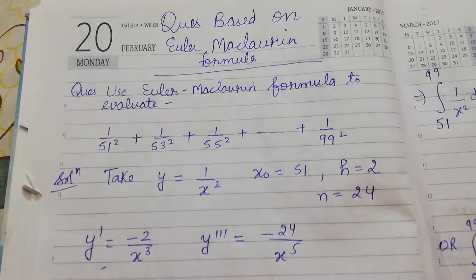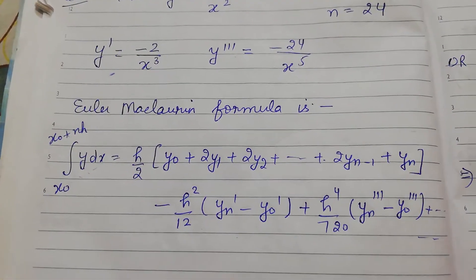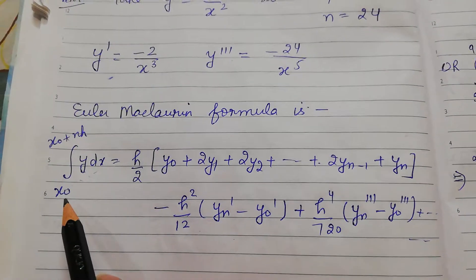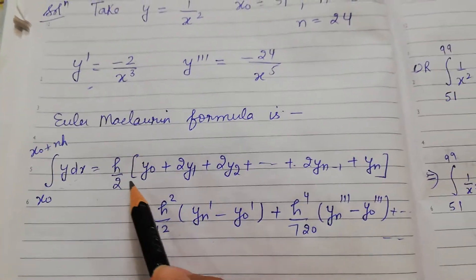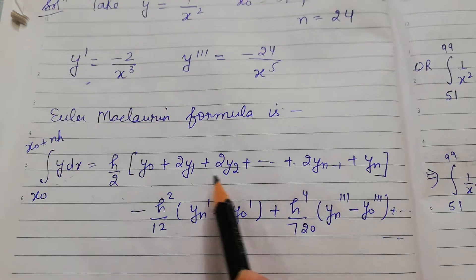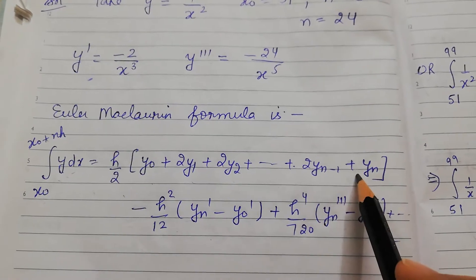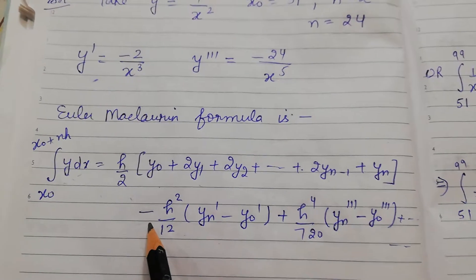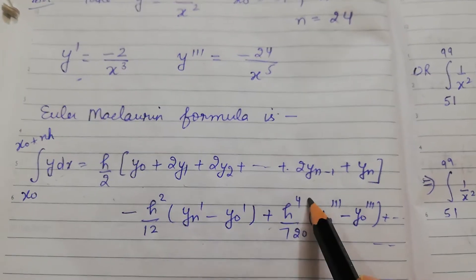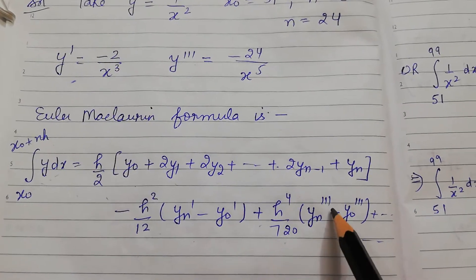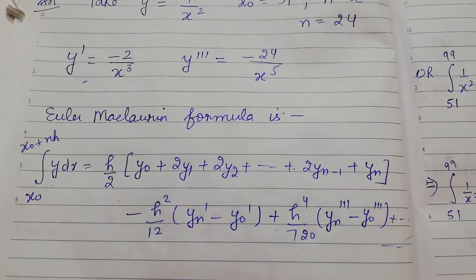First of all, I want to make you revise what is the Euler-McLaurin formula — we have done this topic already. The formula is: integration from x₀ to x₀ + nh of y dx equals h/2 times (y₀ + 2y₁ + 2y₂ + ... + 2yₙ₋₁ + yₙ) minus h²/12 times (yₙ' − y₀') plus h⁴/720 times (yₙ''' − y₀''') plus so on. This is your Euler-McLaurin formula.